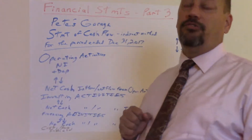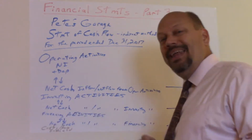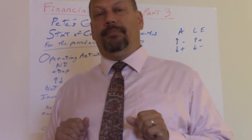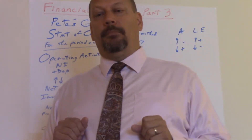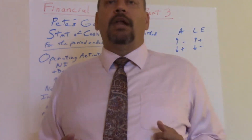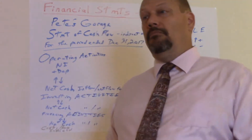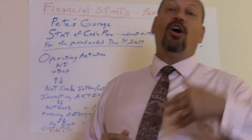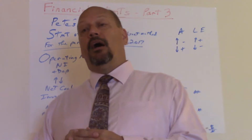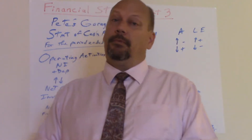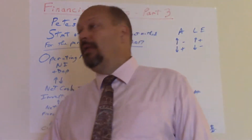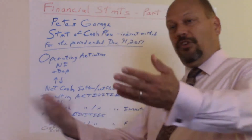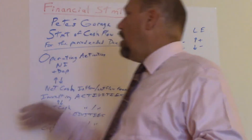Financing activities are pretty simple — there are two items. The first is bringing on another owner, like selling stock or bringing on a partner. The second is borrowing money — obtaining financing, like a student loan. Cash coming in is positive; cash going out is negative for all three categories.